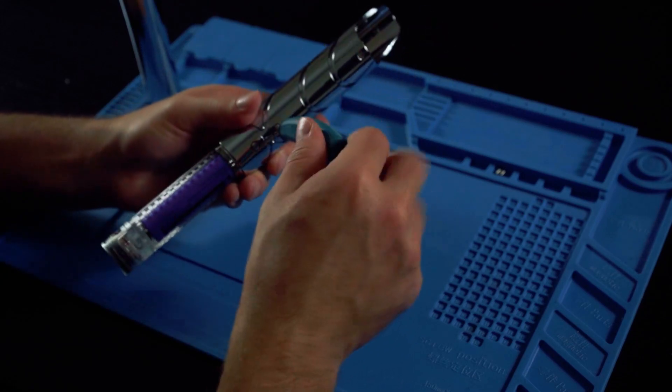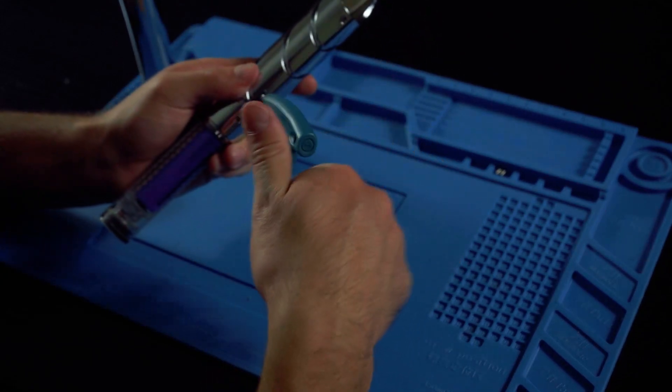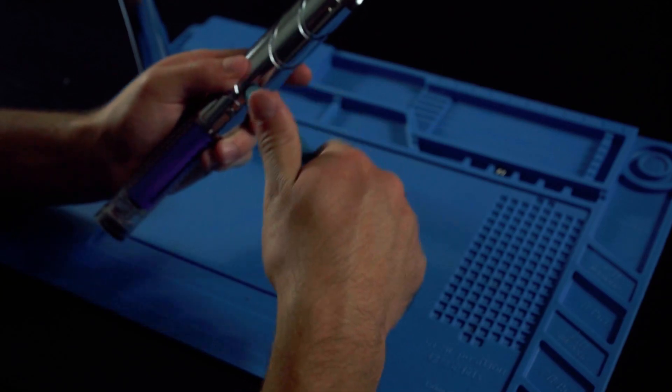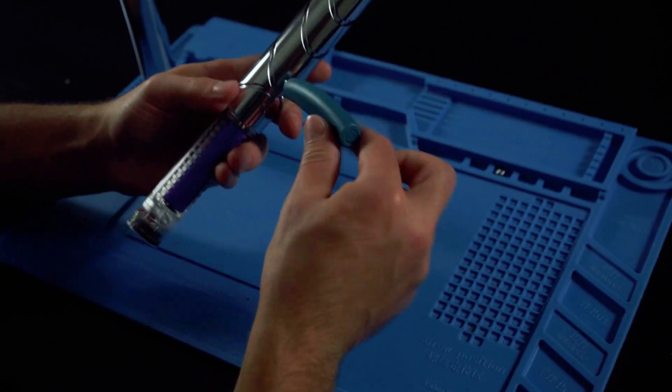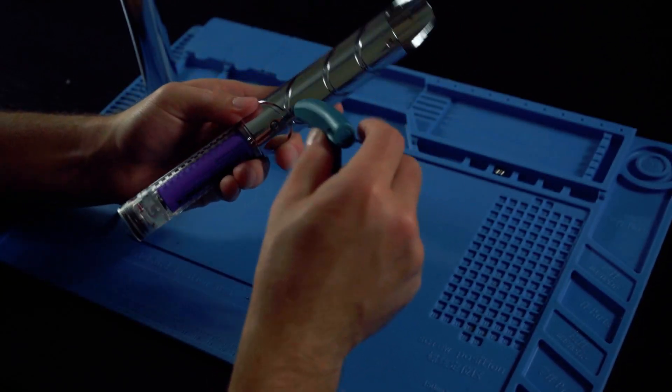Use caution when screwing in this top screw right here, as if you over tighten it, it may cause damage to the charge port or button. So just tighten it until your button and charge port are sitting securely in the hilt.